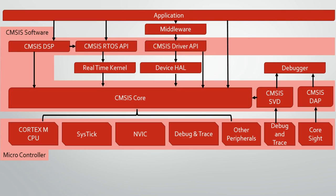The CMSIS Driver is used by middleware to connect other devices with the Cortex processor. For example, a Bluetooth antenna attachment will still need to communicate with the processor, and so CMSIS Driver allows people who make the Bluetooth antenna hardware to have a nice general interface to the processor, independent of who actually makes the hardware that surrounds that processor, be it ST or Freescale.